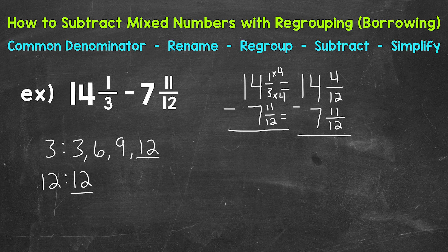Now we're ready to subtract because we have that common denominator. So we have 4/12 minus 11/12. But there's a problem because we cannot do 4 minus 11. We need to regroup or borrow in order to subtract. So we need to borrow one whole from the 14.